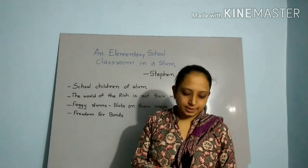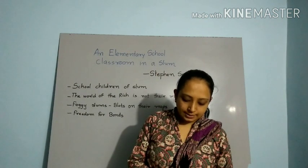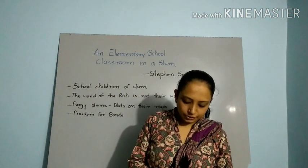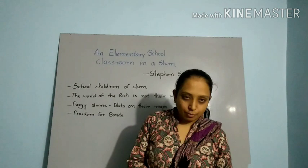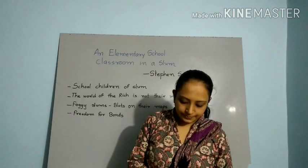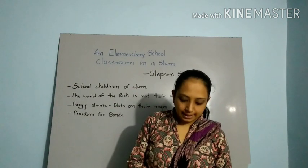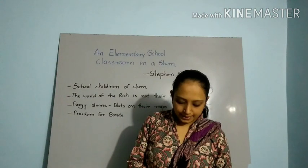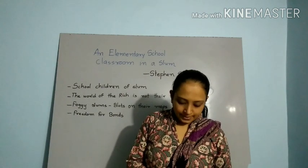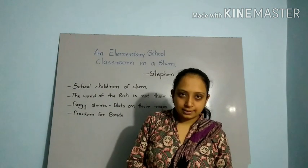Now the first stanza: 'Far, far from gusty waves, these children's faces, like rootless weeds, the hair torn round their pallor. The tall girl with her weighed-down head, the paper-seeming boy with rat's eyes, the stunted, unlucky heir of twisted bones reciting a father's gnarled disease, his lesson from his desk at back of the dim class.'